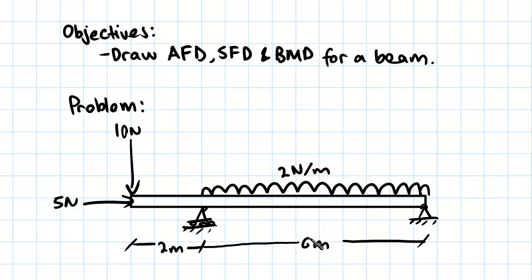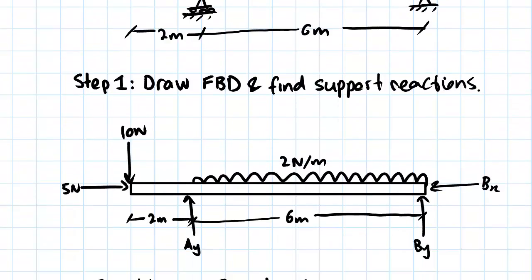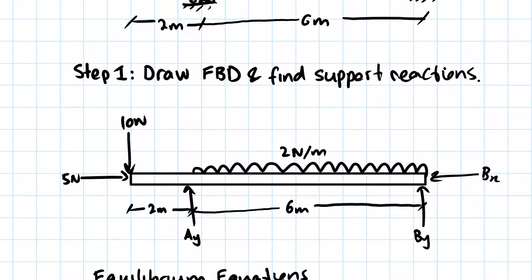Our first step is to draw the free body diagram. I've drawn the free body diagram here with the reaction forces. We've got two reactions at the pin joint and one reaction at the roller joint. We're going to apply equilibrium equations to solve for these three unknown forces.